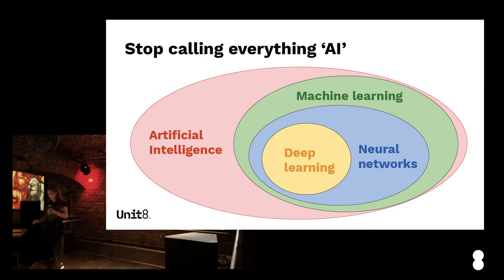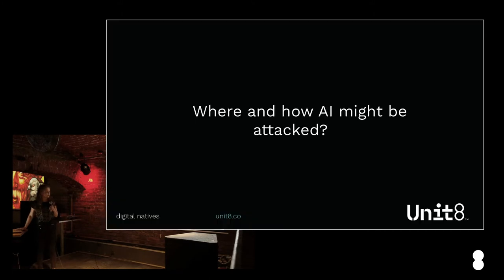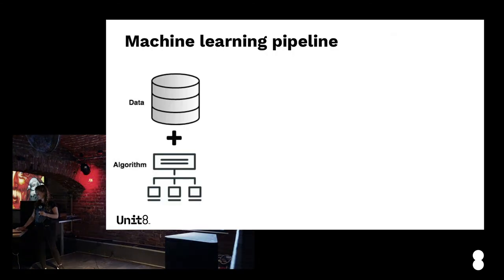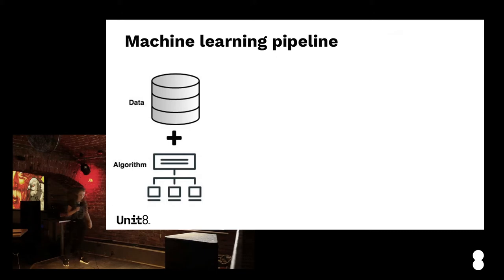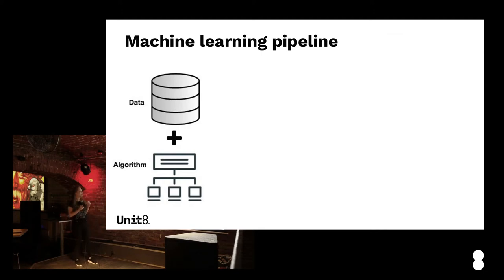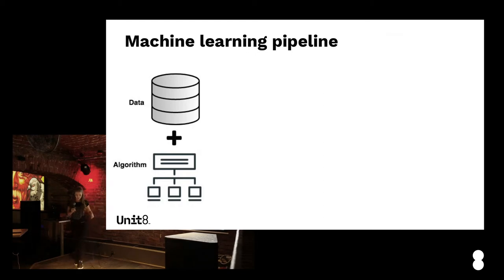Knowing all that, we can try to answer our first question: where and how might AI be attacked? Every machine learning algorithm requires data. In our database we can have rows of data — each one is a separate learning example. The data is represented by features in columns, and we also have labels so we know which class every example belongs to.